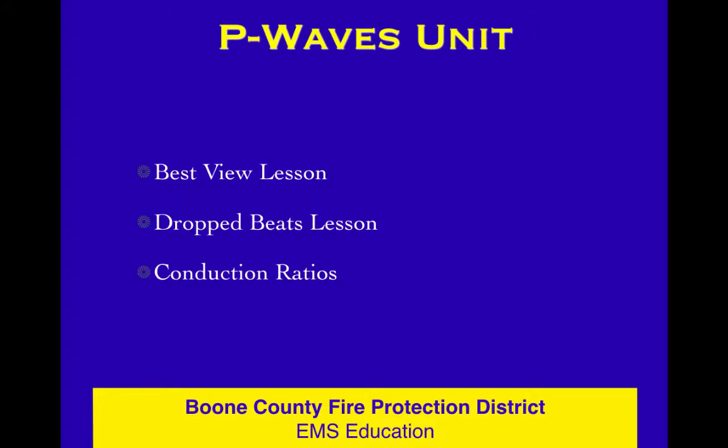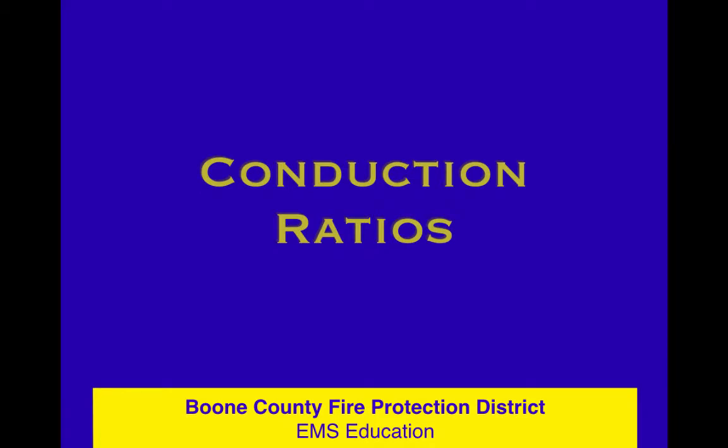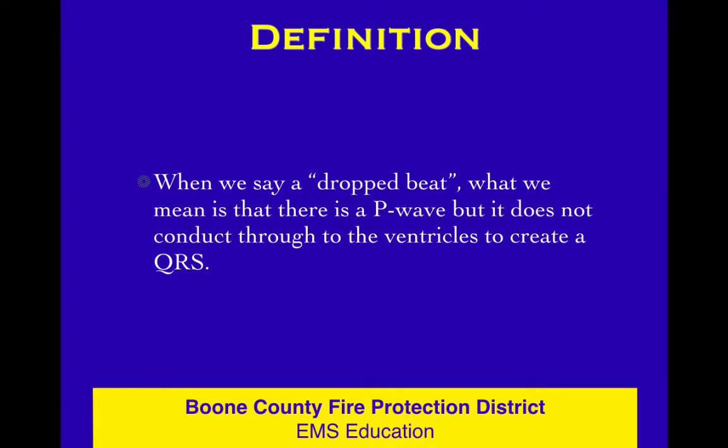Then we talked about dropped beats. When you have irregular rhythms and dropped beats, march out the P waves. Are the P waves coming on time, or does one come early? A PAC would be early and weird looking compared to the other P waves. When we say it's a dropped beat, what we really mean is that there's a P wave that does not conduct - a P without a QRS.